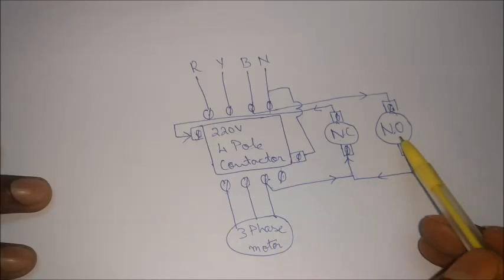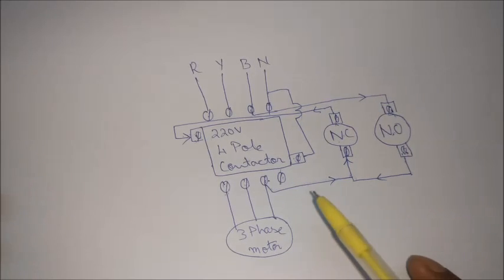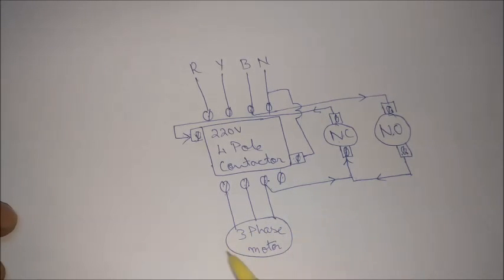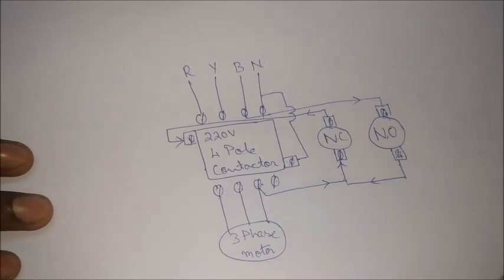So this is how the NO and NC connection works. But what is the main purpose of all this?